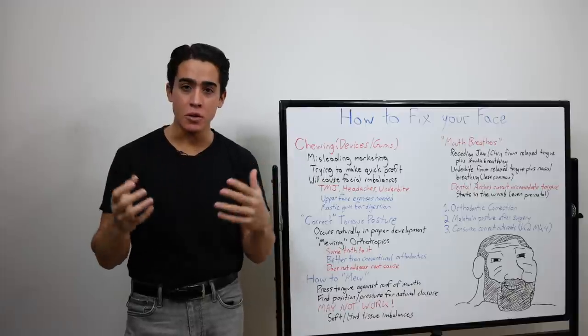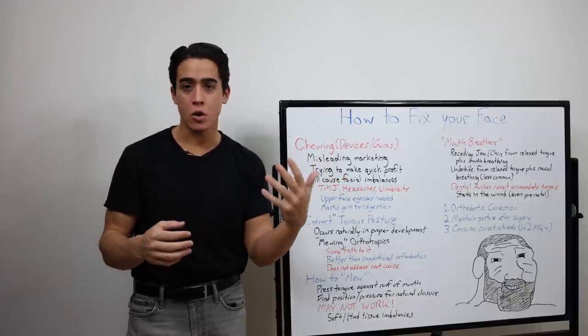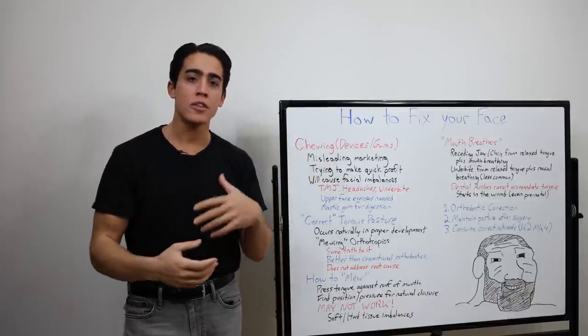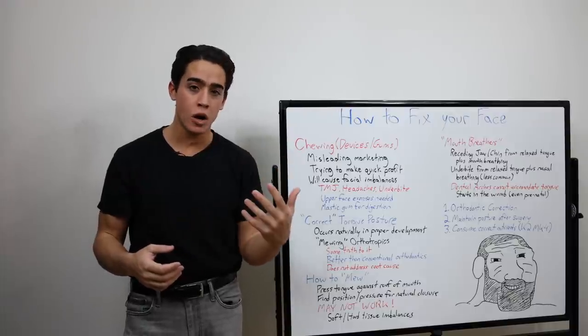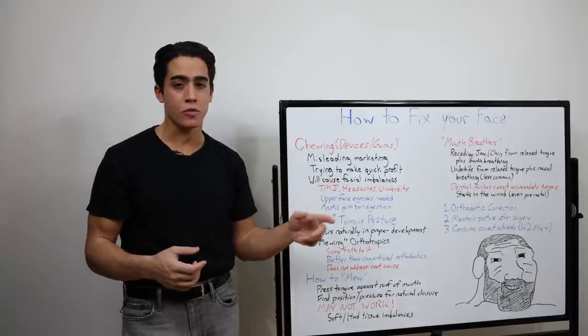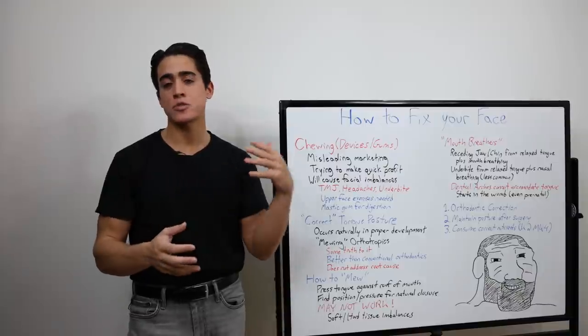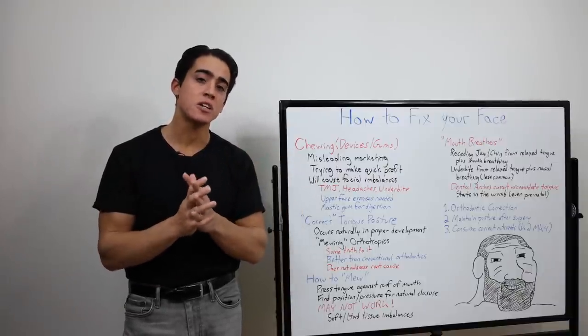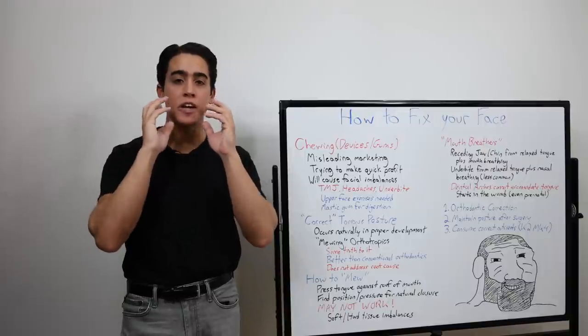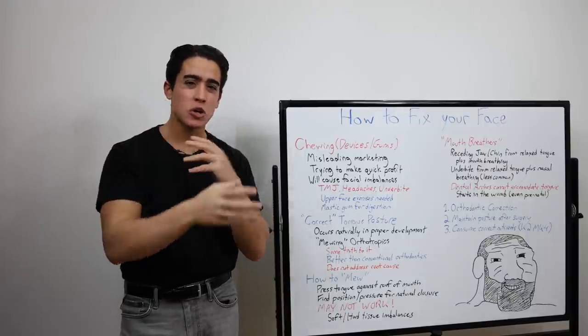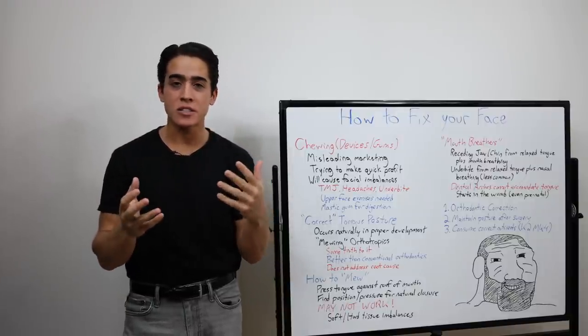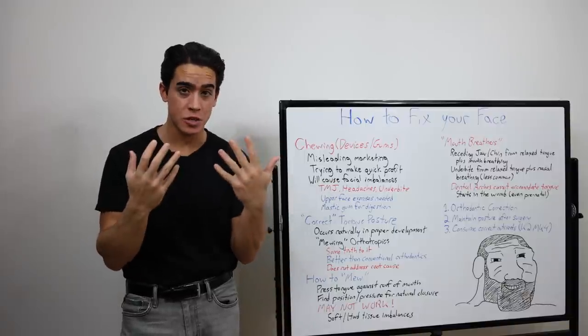John and Mike Mew, Mew is their last name so they called this mewing, are a father and son orthodontic duo. And they actually call what they do orthotropics because it's different than traditional orthodontics. They use specific devices to correct a child's facial posture, and they're correct on some recommendations, specifically this tongue posture.